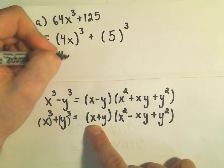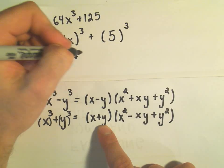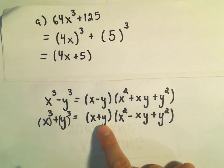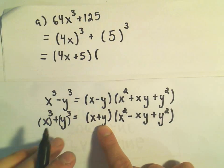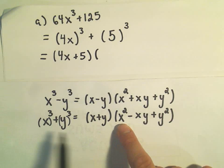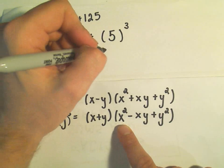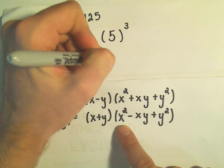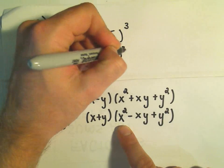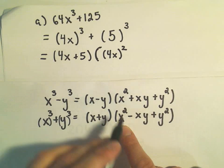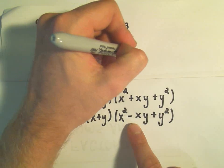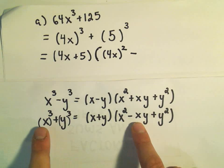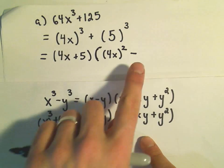So instead of x, I've got 4x, and then it just says write plus whatever's in the second set of parentheses. And then it says whatever was in the first set of parentheses, take that thing and square it. So I'm taking my 4x and I'm squaring it. Then it says write a minus sign. It says take the first thing times the second one.